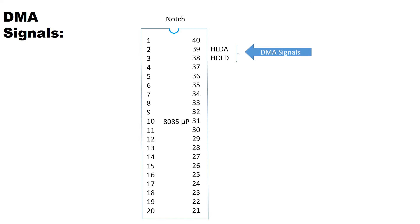In 11th standard we learnt two pins in the DMA process: bus request and bus grant. Bus request was the signal sent from the DMA controller to the microprocessor requesting to give the bus, and bus grant was the acknowledgement for it. These two pins in 12th standard are known by different names: HOLD and HLDA. HOLD is equivalent to bus request and HLDA is equivalent to bus grant. Let us discuss these pins in detail.